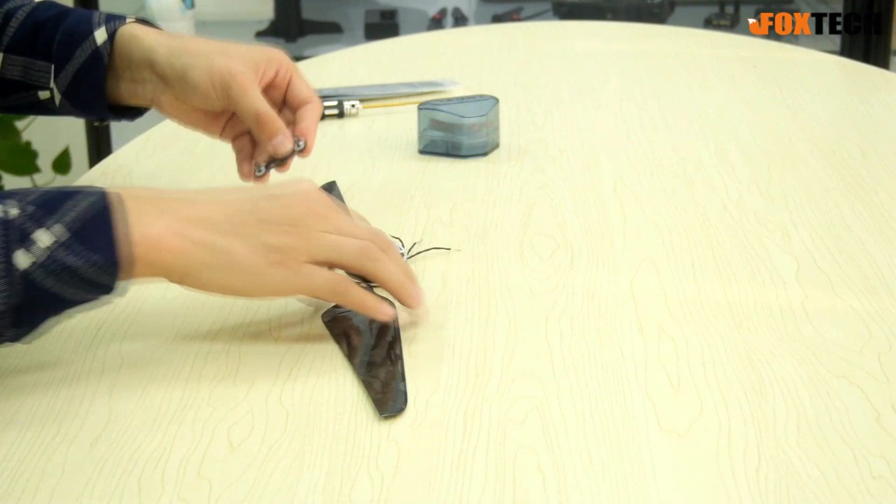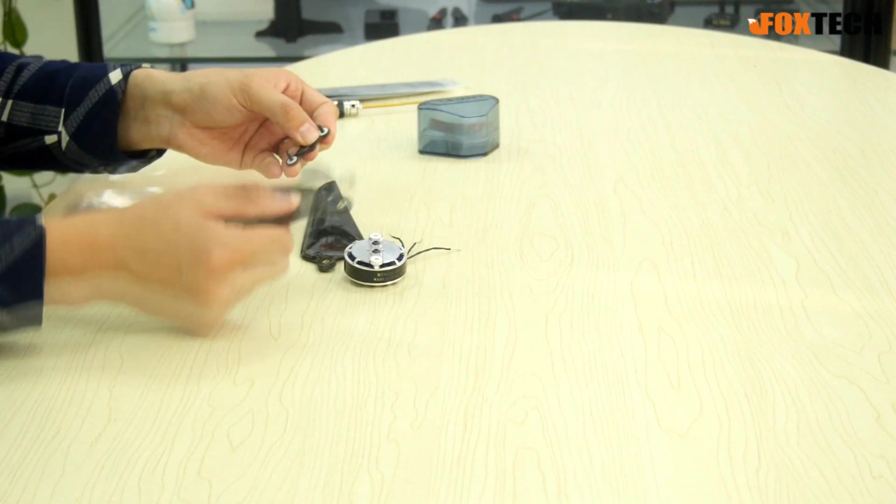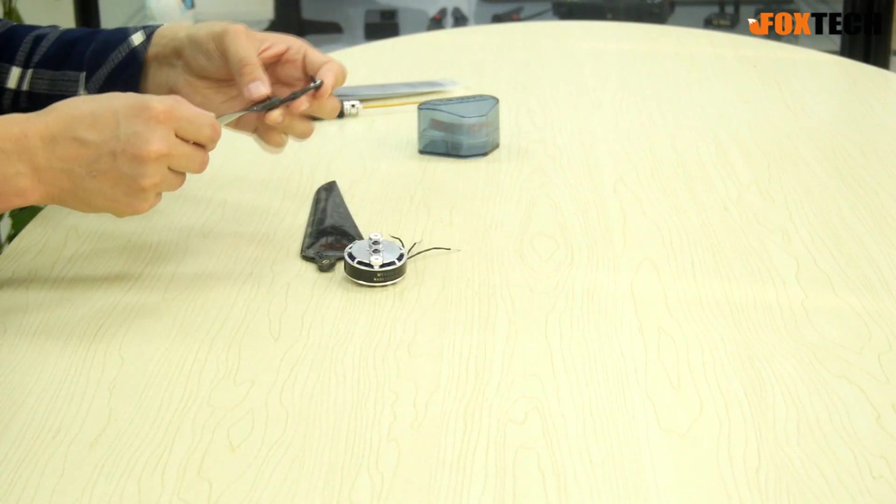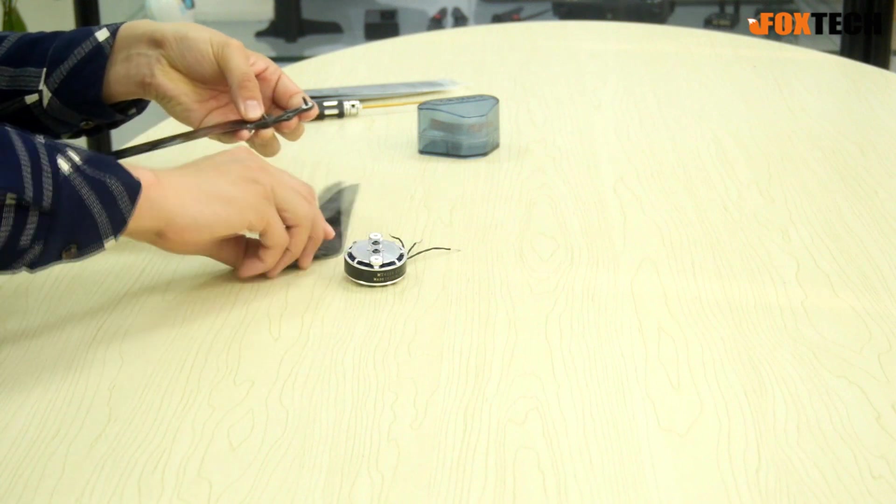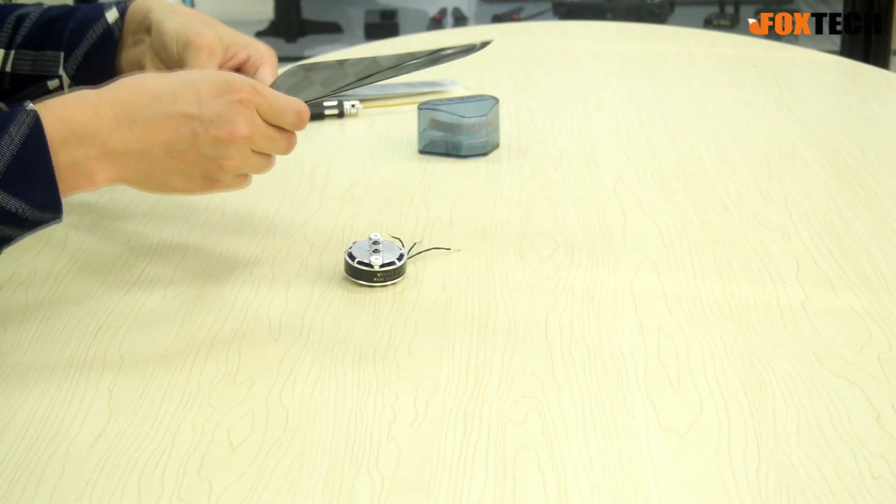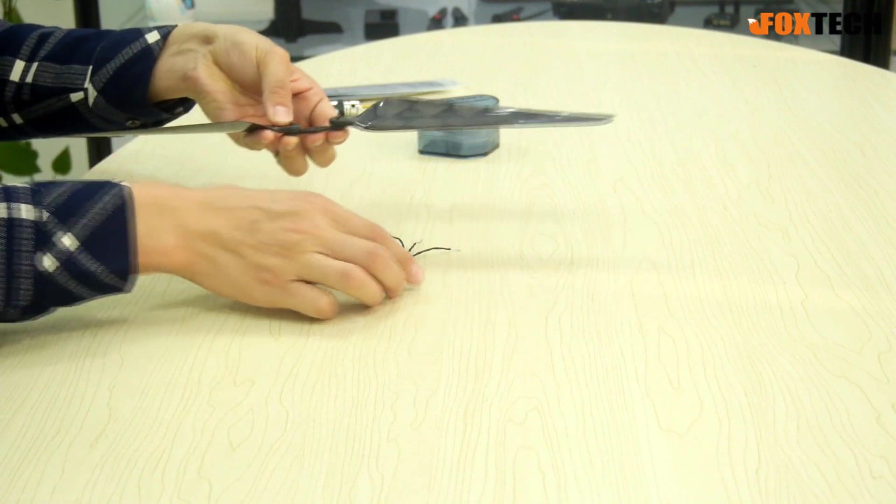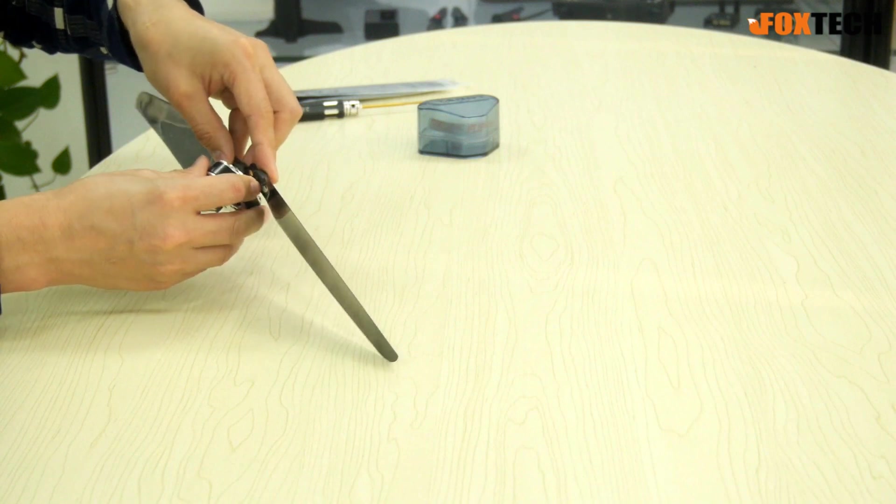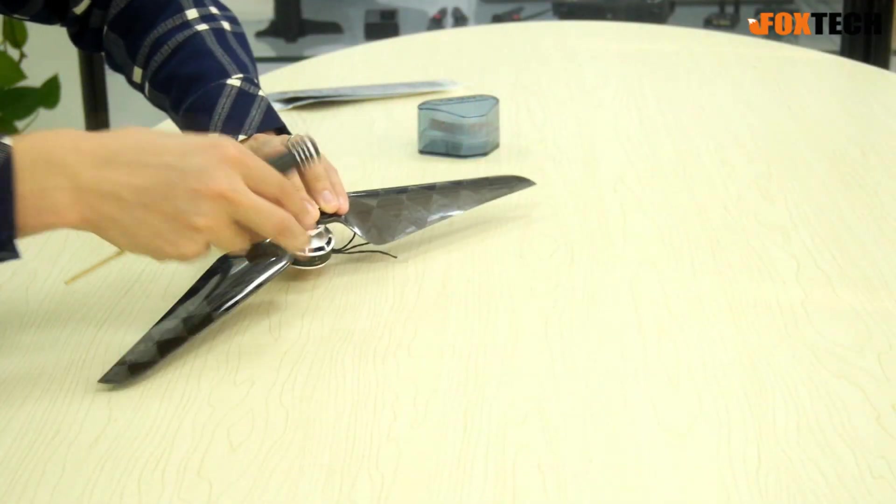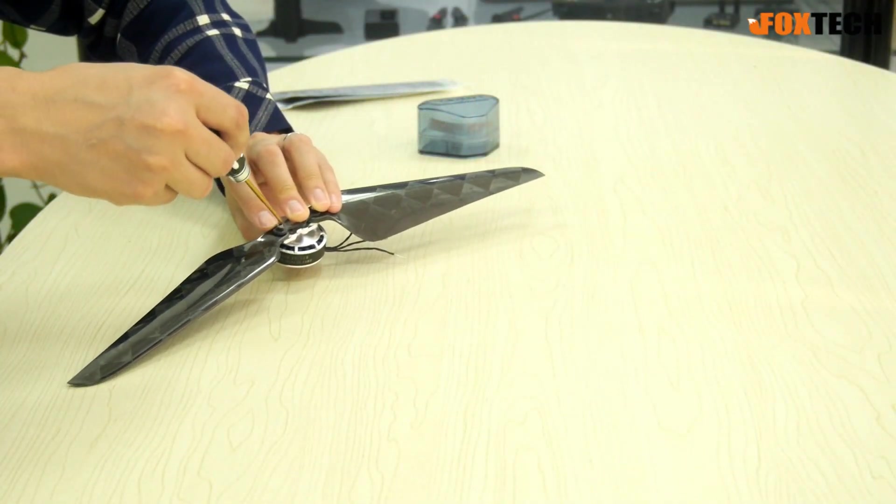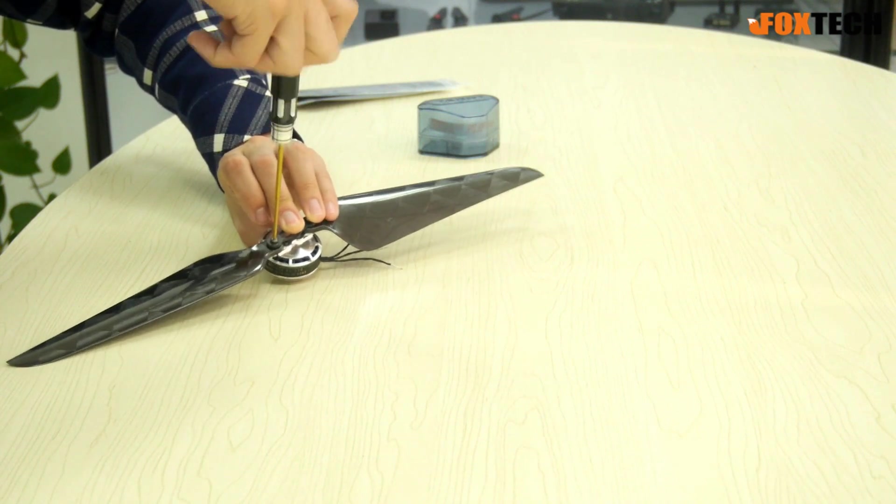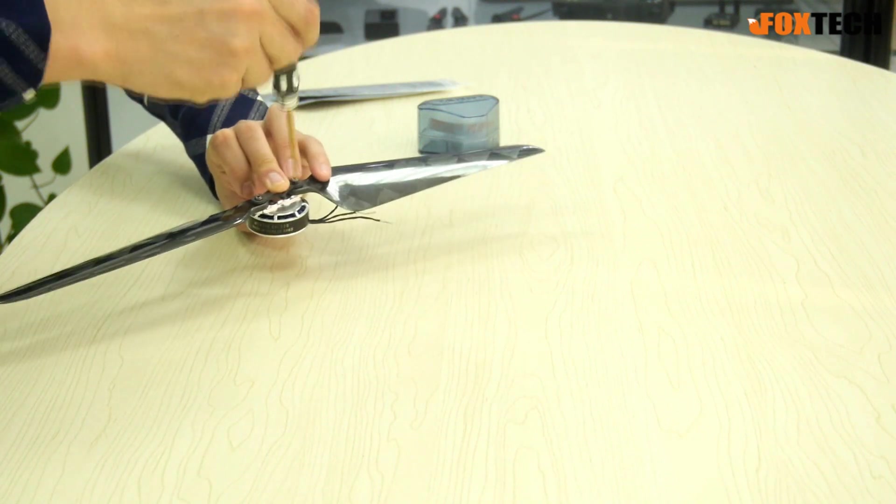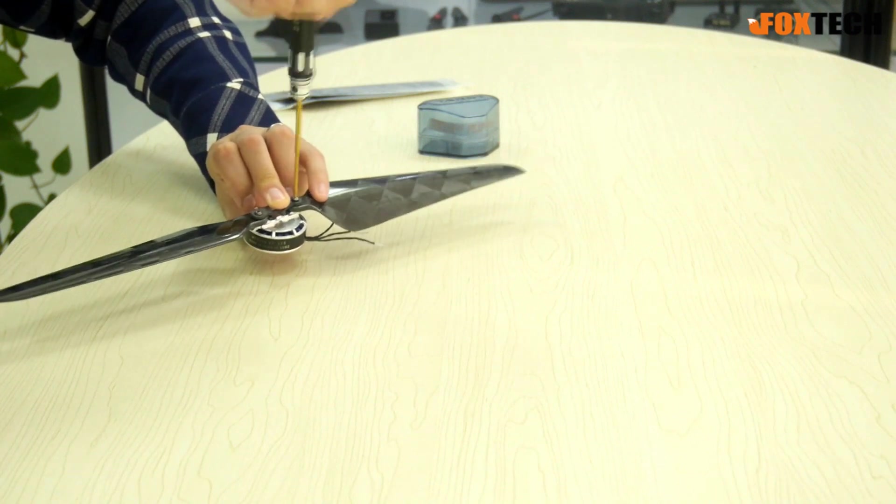What you're going to do next is pay attention to the rotation direction of the propeller and the motor. You have to make sure they are 100 percent in correspondence, meaning they have the same rotation direction. Then use a screwdriver to tighten the screws onto the motor.